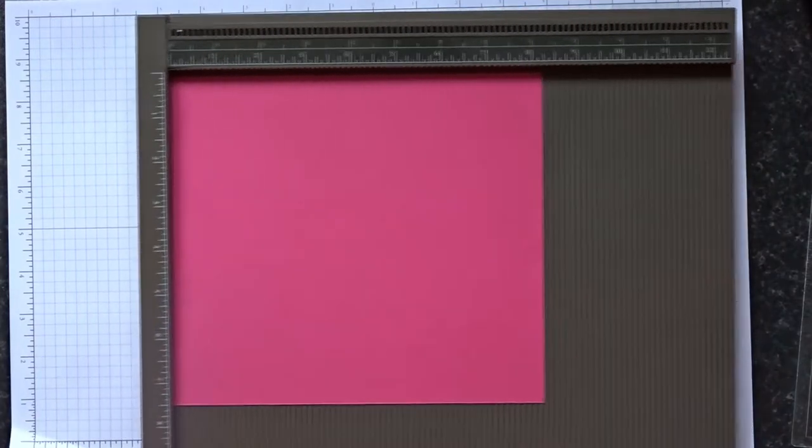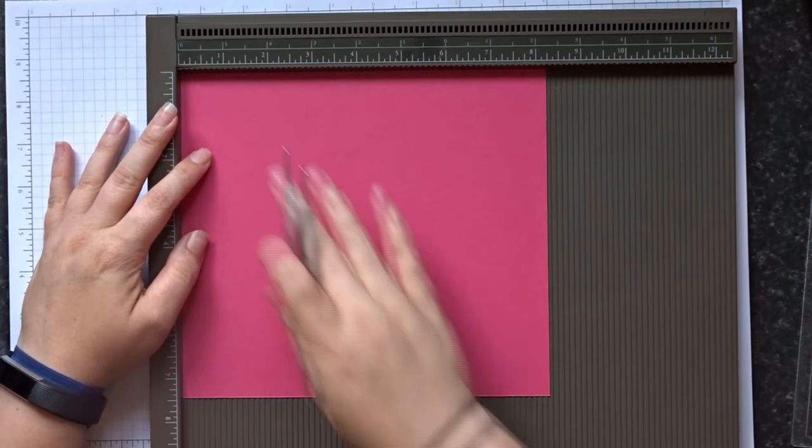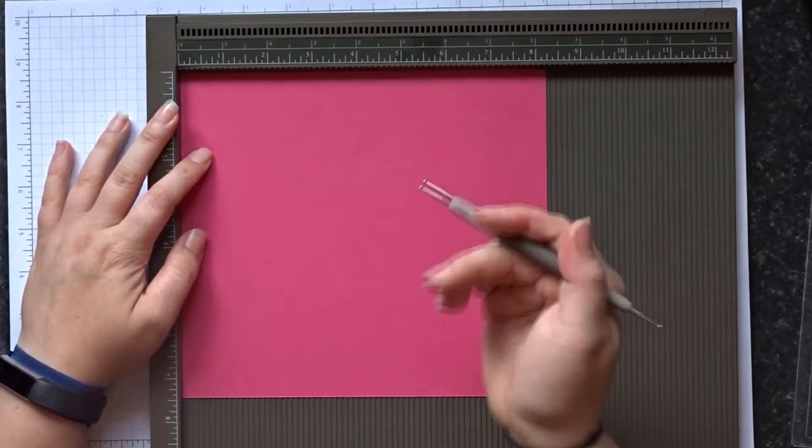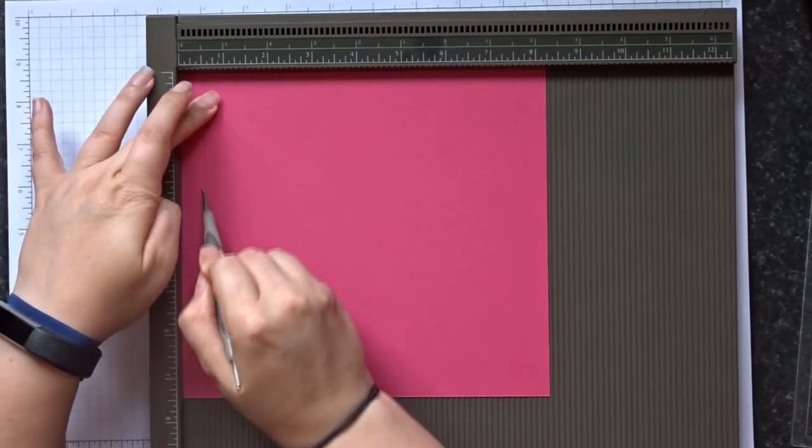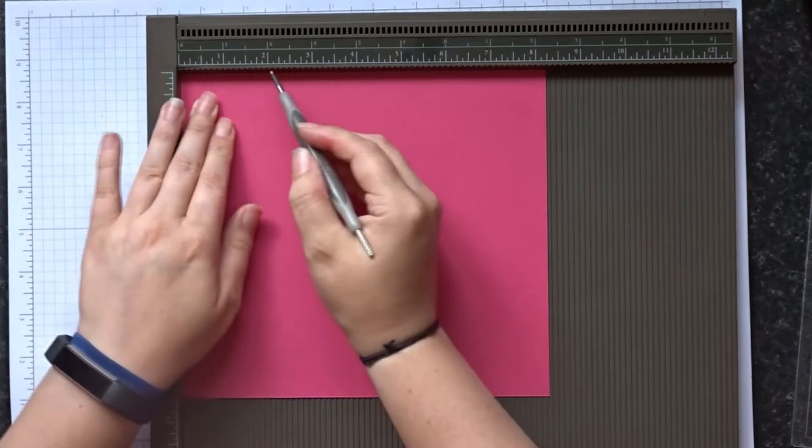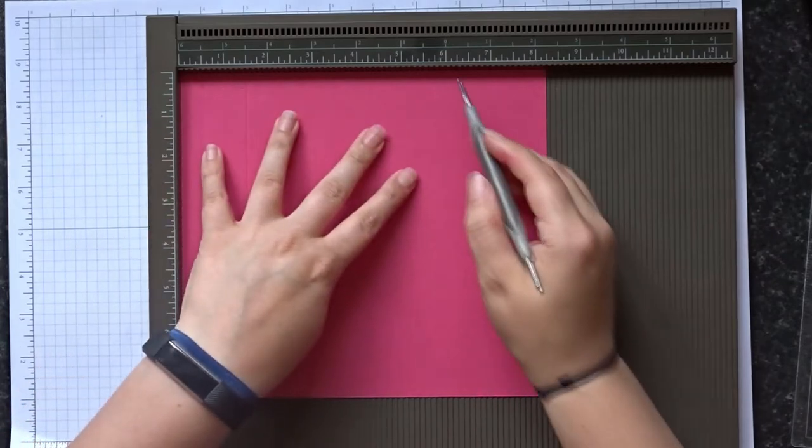So what you're going to do is you need to score. Down the left hand side make sure it's pushed, so this is on the long side, eight and a quarter. We're going to score at half an inch, one and a half inches, and six and a half inches.